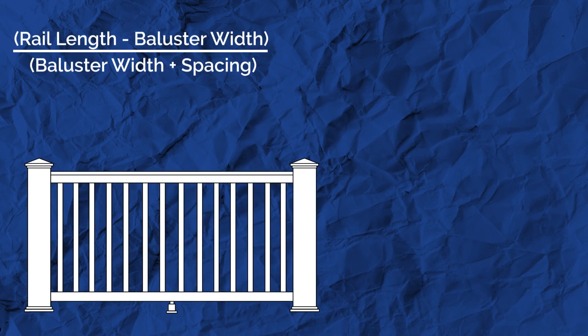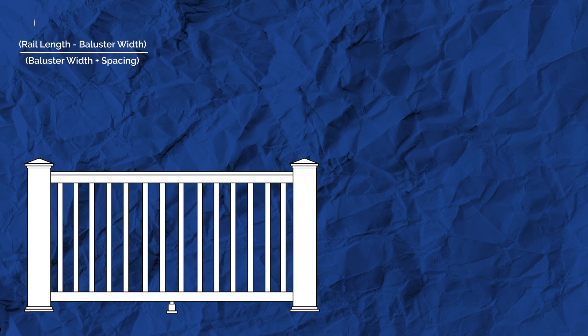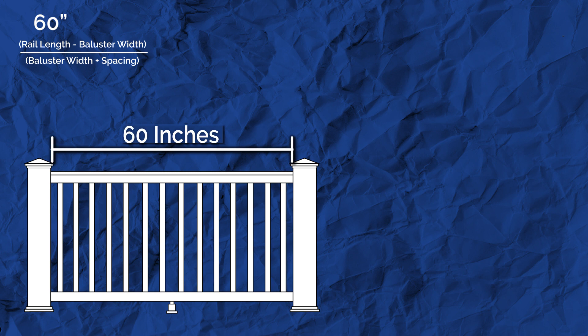Use your tape measure to find the total length of your rail from post to post. In our example, we'll be working with 5 feet of railing, which equals 60 inches.